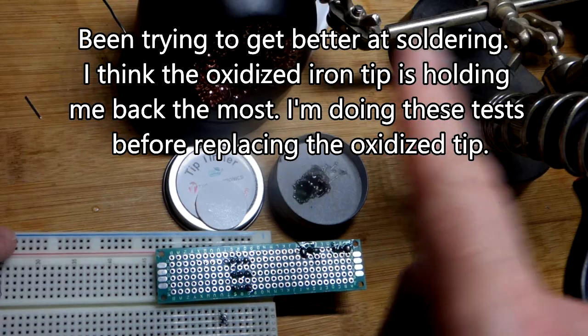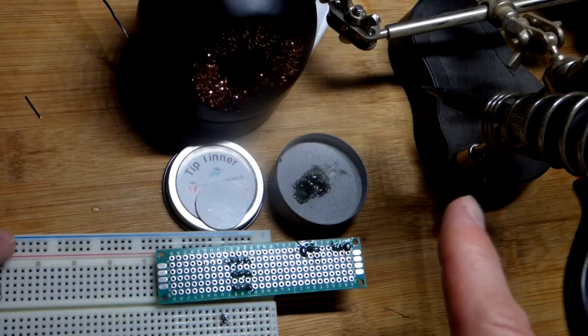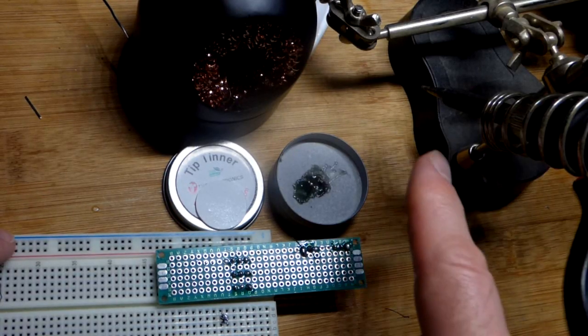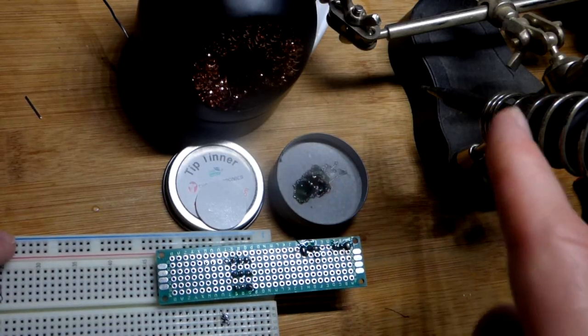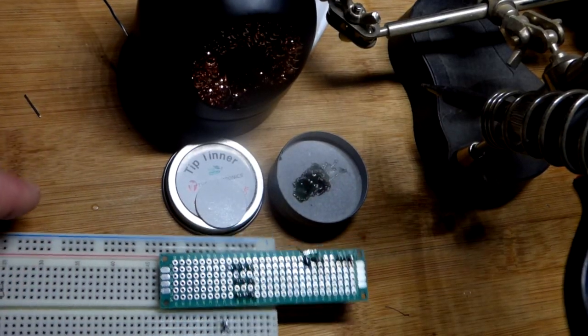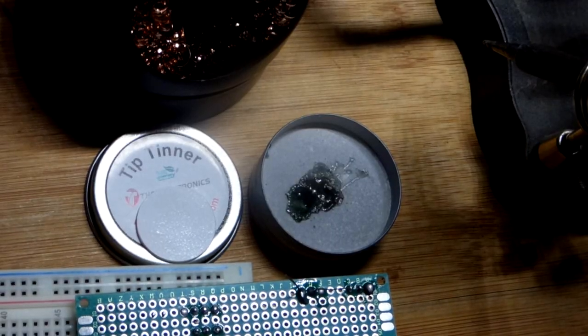So I got an old soldering iron. This is just a helping hand stand that I had laying around. It's not usually the stand I use, but in any case we got the iron there. I put a little bit of this tip tinner on there and I'm letting it sit there right now.